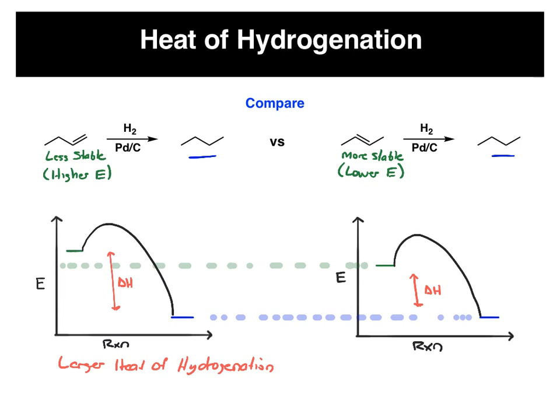If you want actual values, for the first example, the heat of hydrogenation of that is negative 127 kilojoules per mole. That's larger and more exothermic than in our other case, there's only negative 115 kilojoules per mole. So here there's more energy released during the reaction.